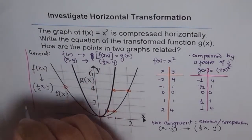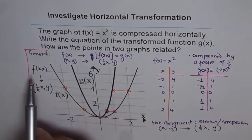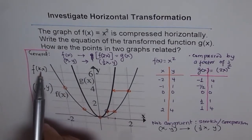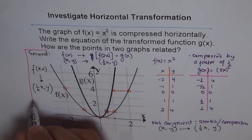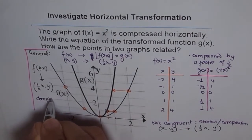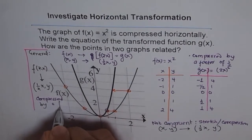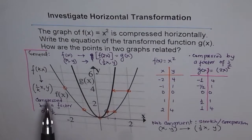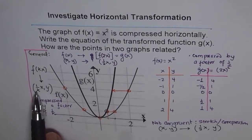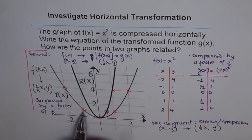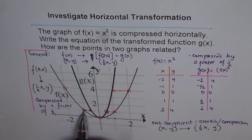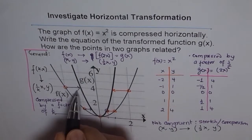So remember: if we have a function g(x) = f(kx), then the transformation is compression by a factor of 1/k. When this happens, y-values remain the same, but each x-value gets multiplied by 1/k. The result is that x-values are reduced by that factor, they come closer together, and you see horizontal compression by that factor.